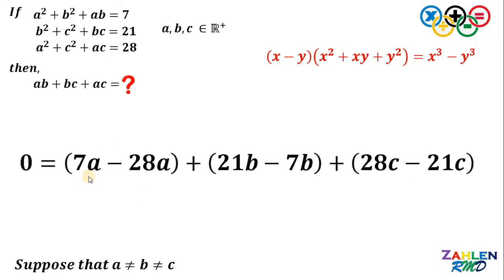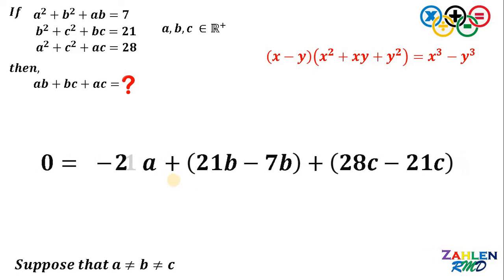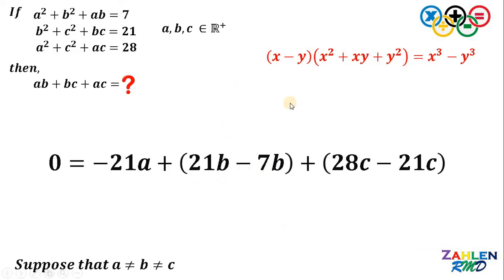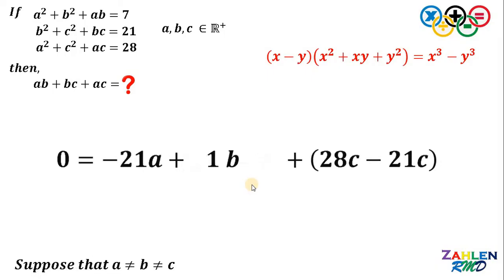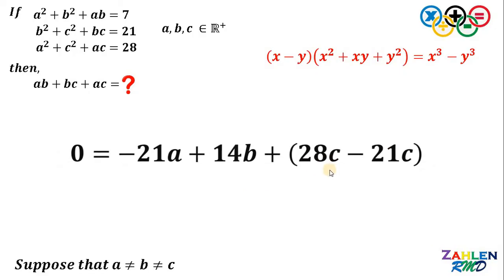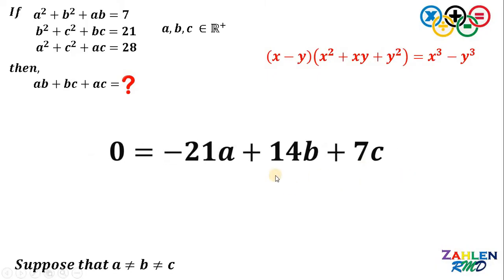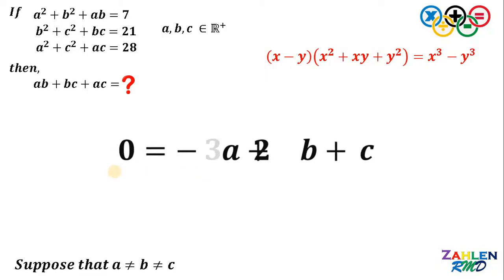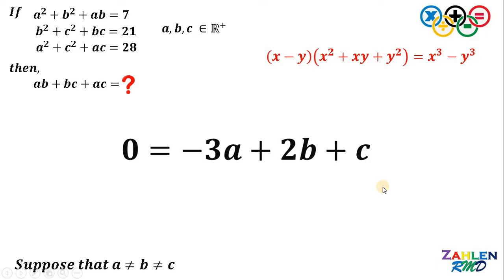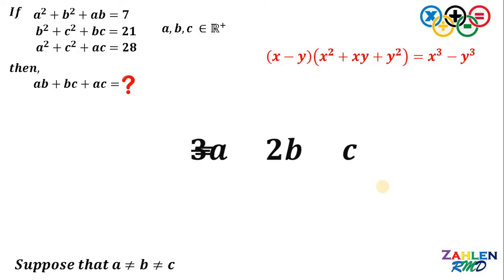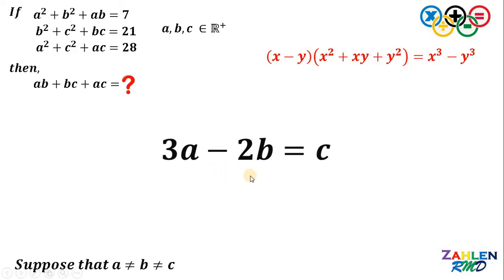So we have 7a minus 28a, which gives us negative 21a. Then 21b minus 7b gives us 14b. And 28c minus 21c gives us 7c. Notice that all numerical coefficients are multiples of 7, so let's divide all terms by 7. This gives us 0 equals negative 3a plus 2b plus c.